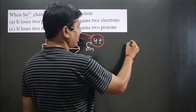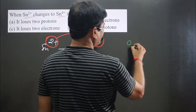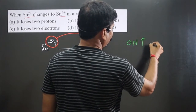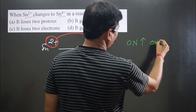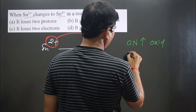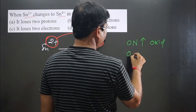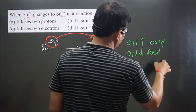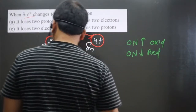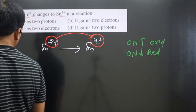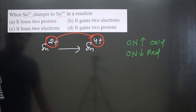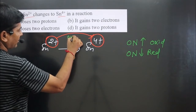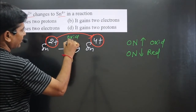Always keep in mind: an increase in oxidation number is always an oxidation reaction, and a decrease in oxidation number is always a reduction reaction. This is a very simple concept. So this is an oxidation reaction because there is an increase in oxidation numbers.